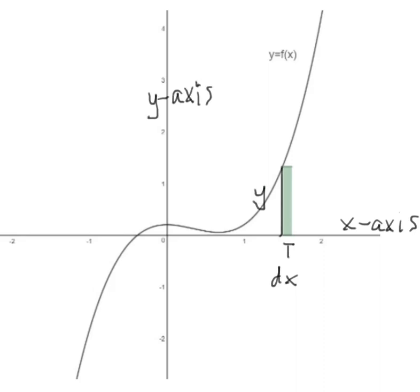The height of this rectangle is y, because it is the vertical distance from the x-axis to the graph. But since y equals f(x), it makes much more sense to call the height f(x) so that our variables are all in terms of x.